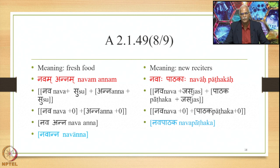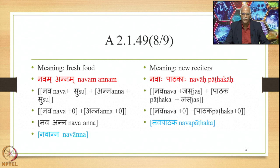For the word Nava: 'fresh food' — Laukika vigraha Navam Annam. Alaukika vigraha: Nava plus Su plus Anna plus Su. After samasa, pratipadika formation, and deletion of both su-pratyayas, the Sandhi operation is performed, yielding the final compound Navanna. Similarly, 'new reciters' — Laukika vigraha Navah Pathakah — following the same processing yields the compound Navapathaka.